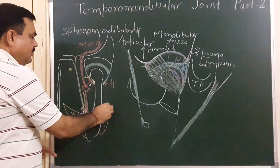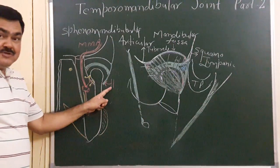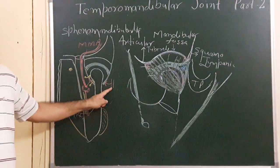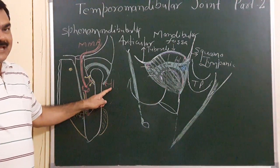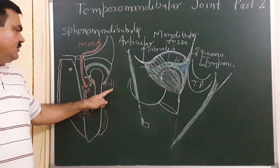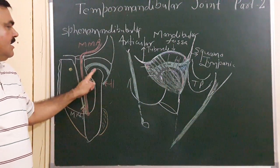Laterally, here is the position of the parotid gland — skin, superficial fascia, then the parotid gland. The facial nerve also pierces the parotid gland. So these are the structures related with this joint.